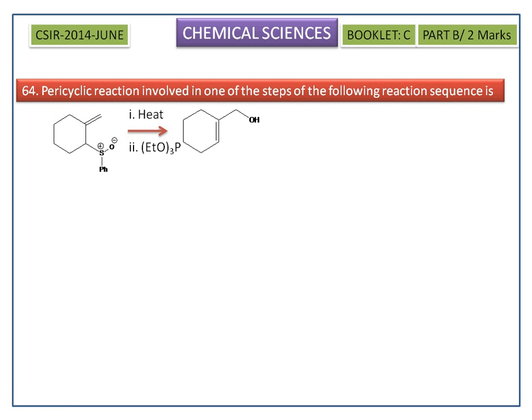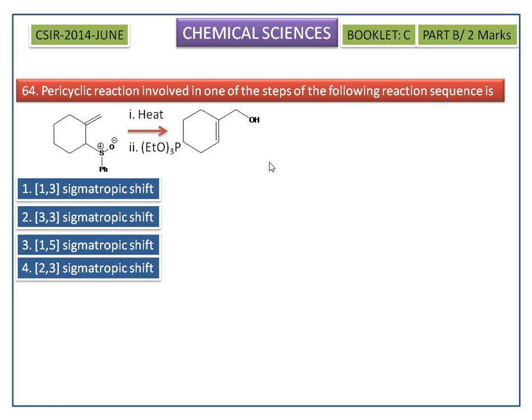A pericyclic reaction is involved in one of the steps of the following reaction sequence. The options are shown here. Sigmatropic rearrangement proceeds by migration of a sigma bond along the pi system. First, we name the sigmatropic rearrangement.